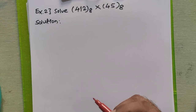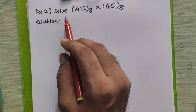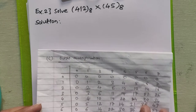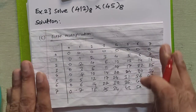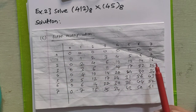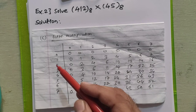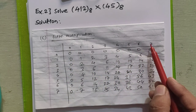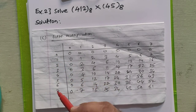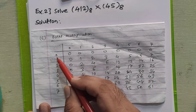To understand octal multiplication better, we'll see one more example. In this second example, we multiply 412 in octal with 45 in octal. To quickly solve this, we can create an octal multiplication table. We write all valid digits 0 to 7 in rows as well as in columns.